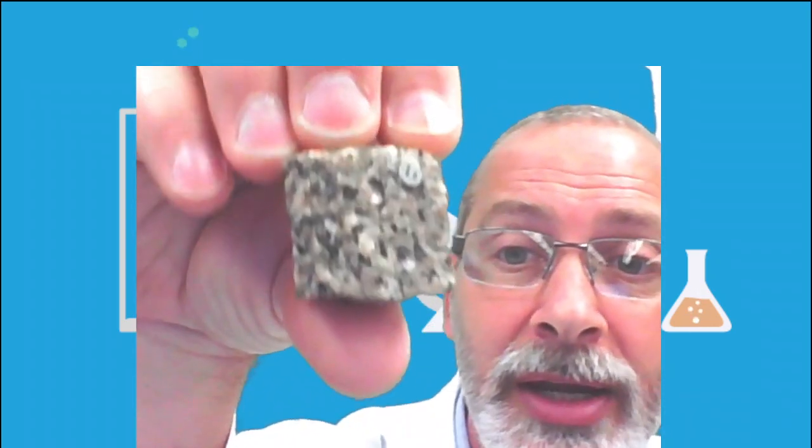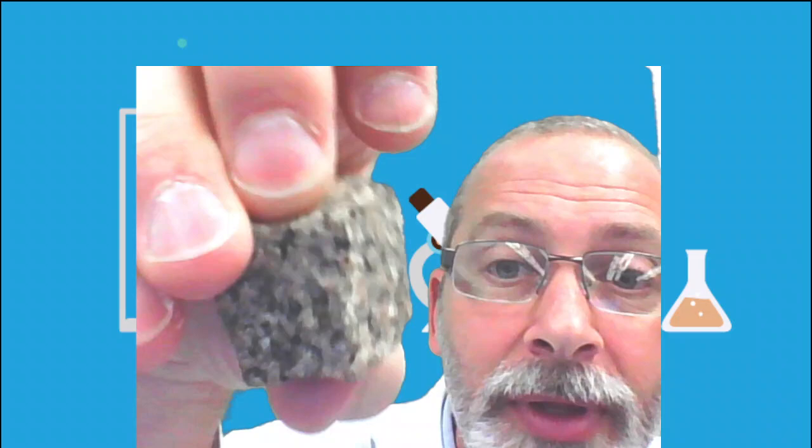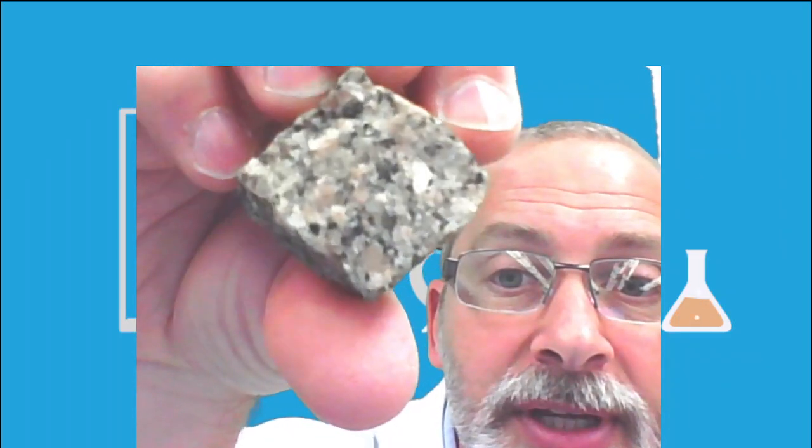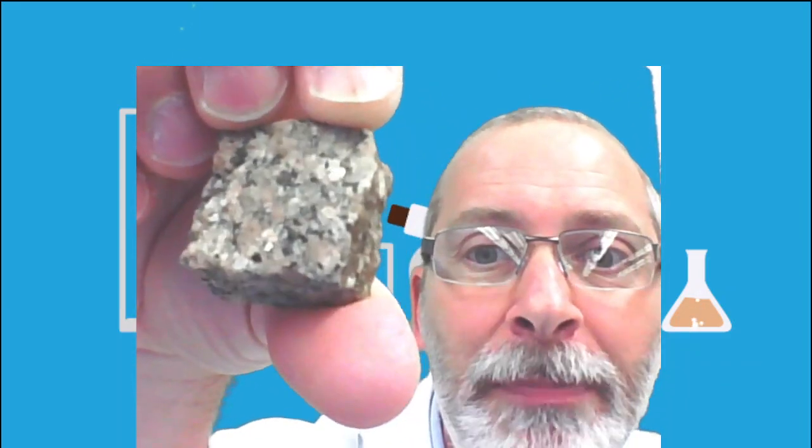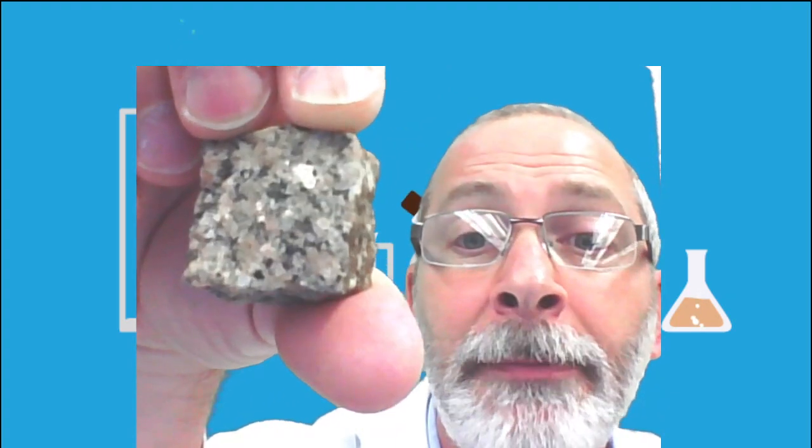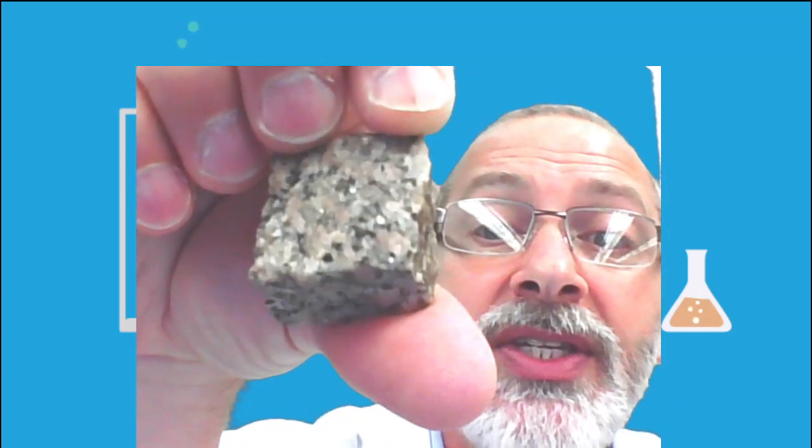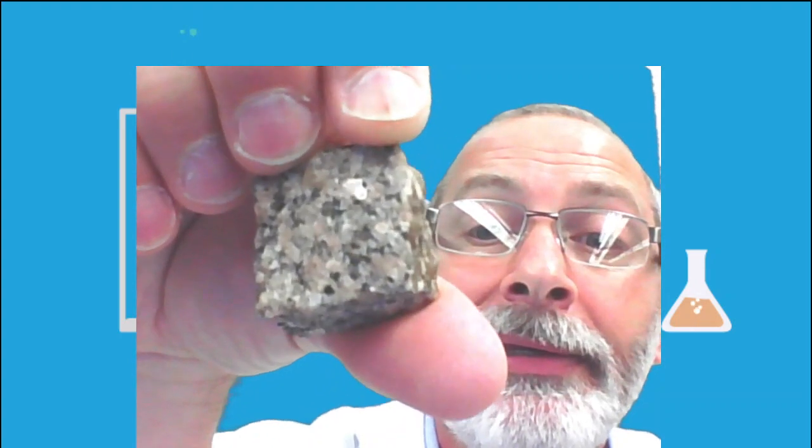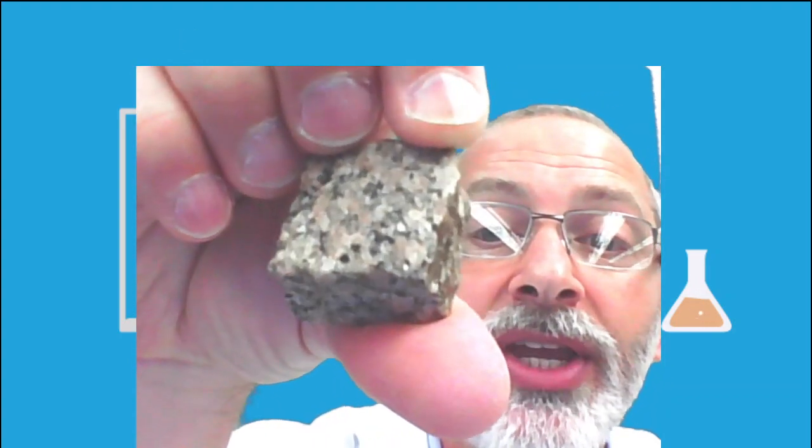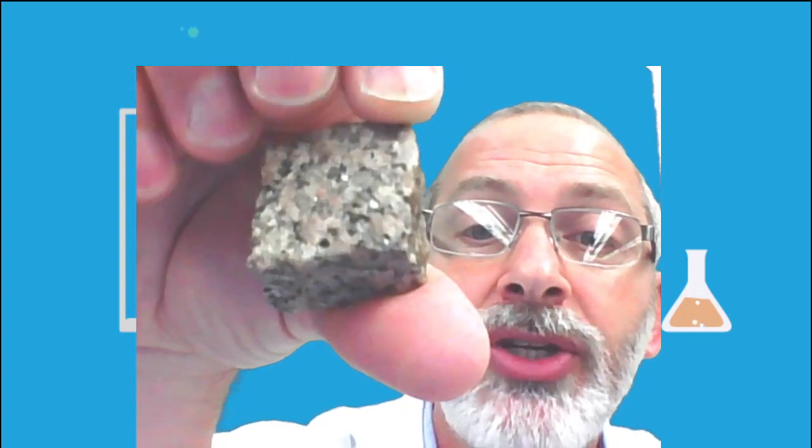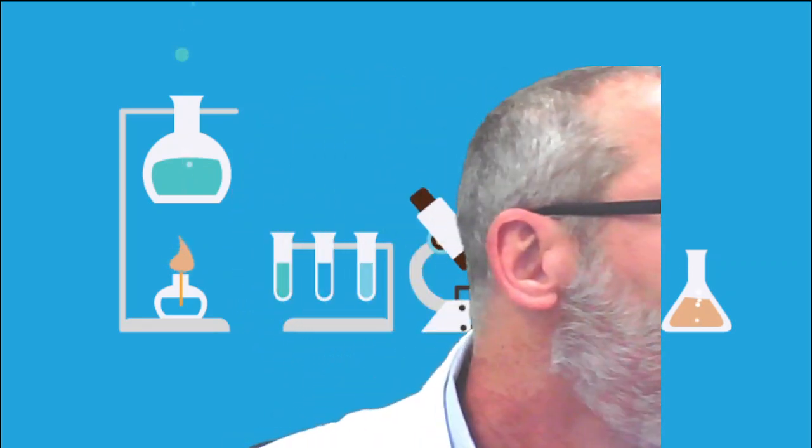This one is igneous rock number two. Notice the different shiny particles here. You might call them different crystals, and the sizes are large enough that you can see them. Hint, hint, hint. So, check out. This is number two. It's actually kind of pretty. I would imagine this would look really nice if it were polished flat.